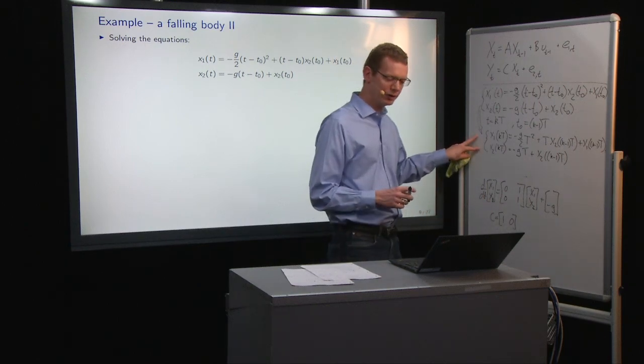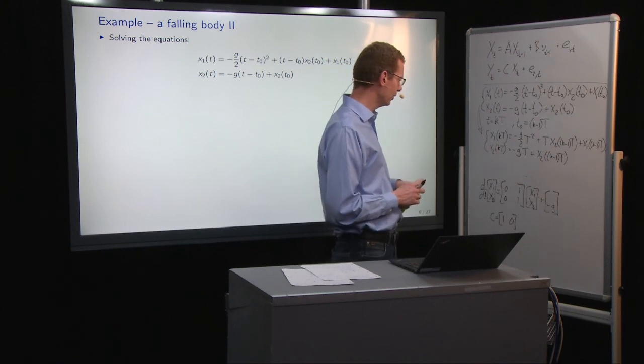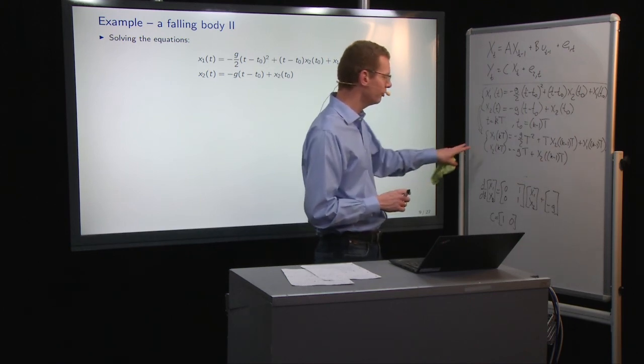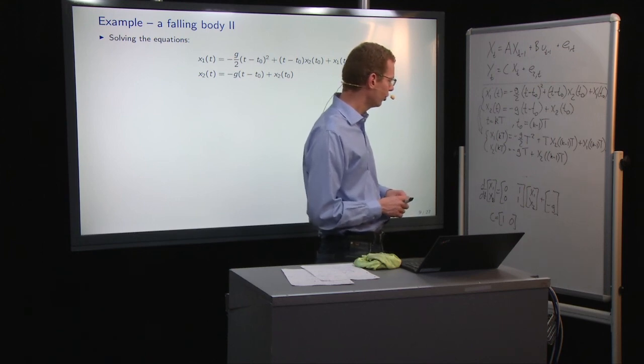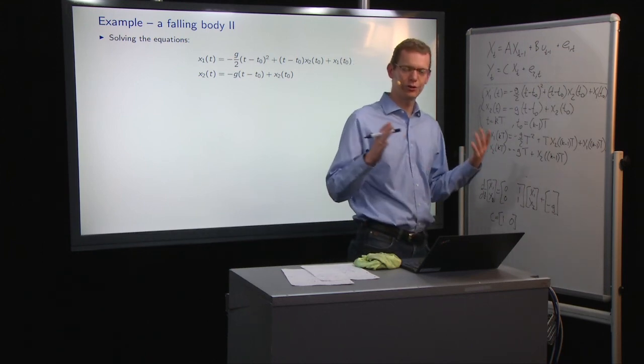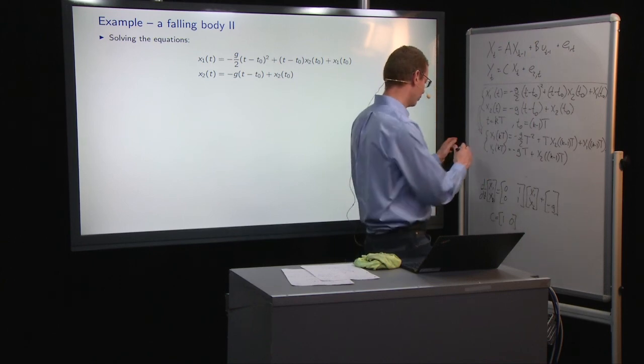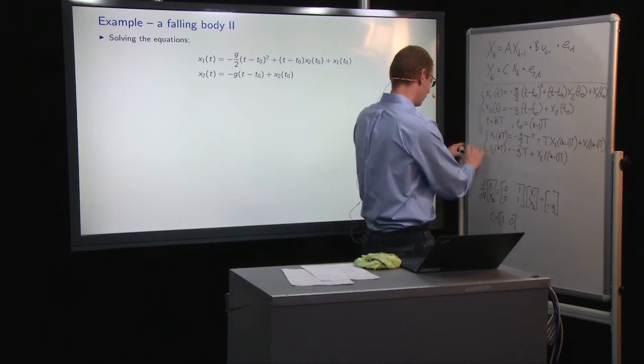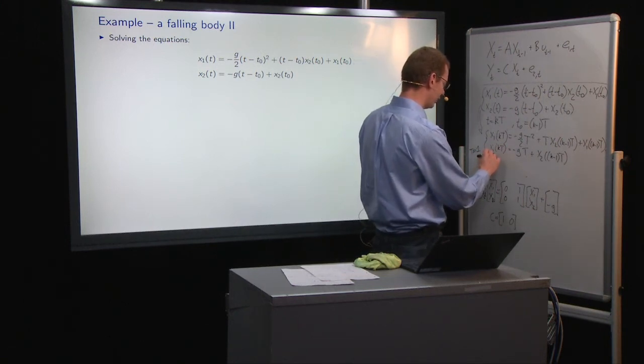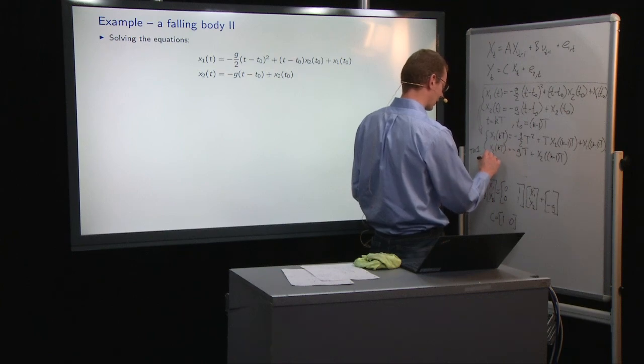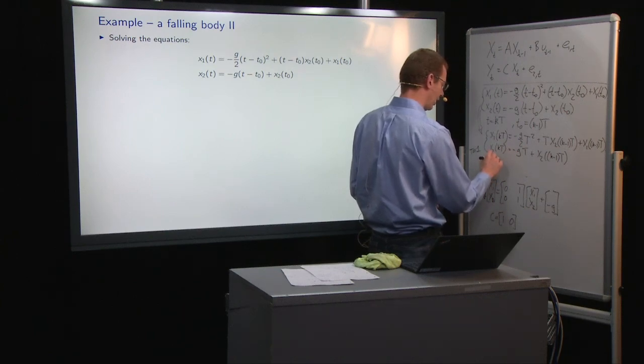Now given this, well, the next step is to look at how can we write this on a state space form. So if we sample, and let's just assume that uppercase T equals to 1, so we just define uppercase T to be unity, without loss of generality, then we can rewrite the system, then we can rewrite the system as, let me do it on vector form.